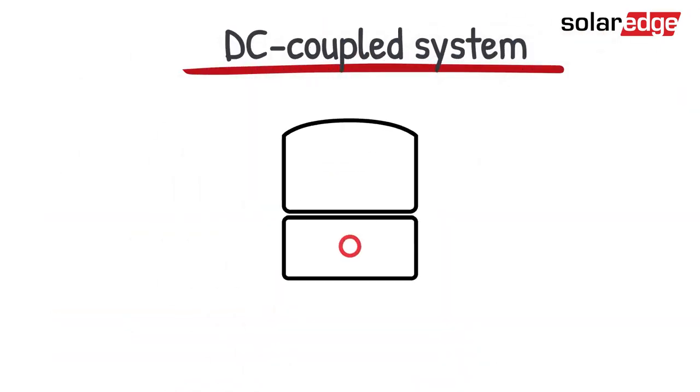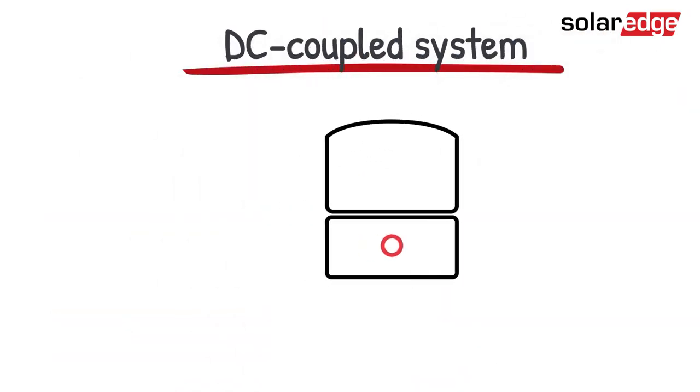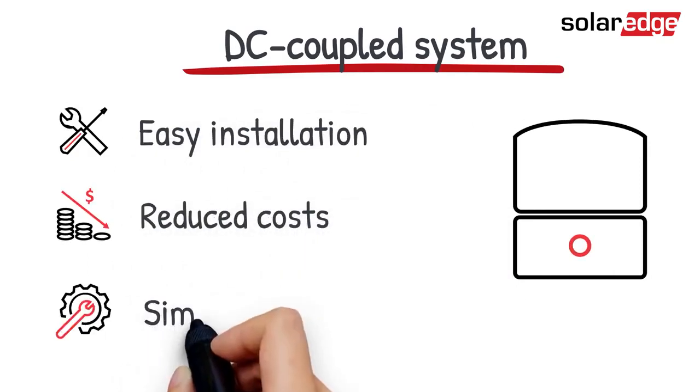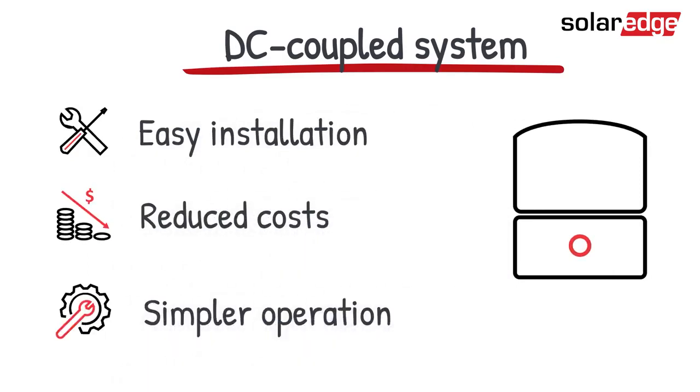With a DC-coupled system, only one solar inverter is required. This facilitates installation, reduces hardware costs, and makes the operation of the whole system more economical and efficient.